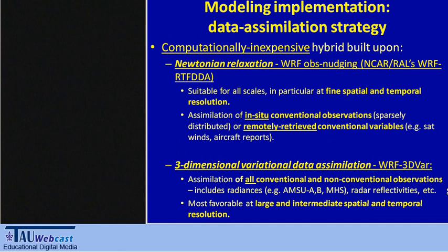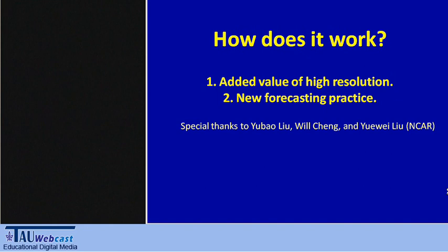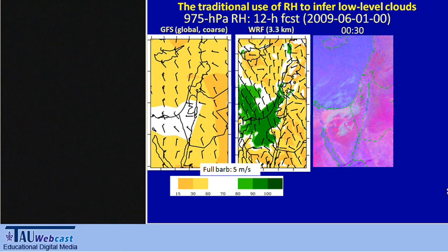We try to assimilate radiances and, in the future, radar reflectivity — which is quite useful for large to intermediate resolutions. The next slides are dedicated to the forecasters. I thank Yubao Liu, Will Cheng, and Yu Wei from NCAR for the figures I'm going to show. In these figures I want to show the added value of the high-resolution forecast and also try to demonstrate new forecasting practices in a very simple way. Forecasters look into clouds — that is the main thing the forecasters at the unit are interested in.